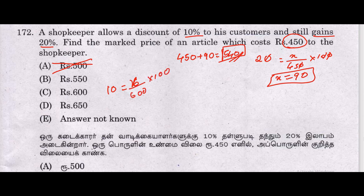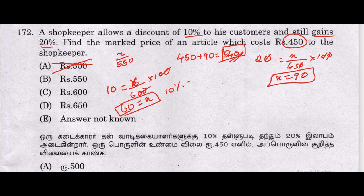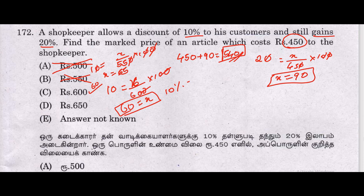Let the marked price be X. After 10% discount on 600, we get 60, so 600 minus 60 gives 540 as the selling price. So 10% discount on marked price 600 gives selling price 540, which matches. Therefore, the marked price is 600 rupees.